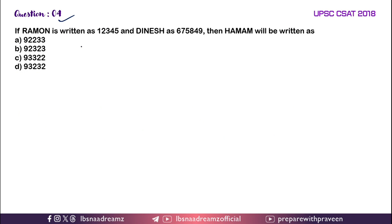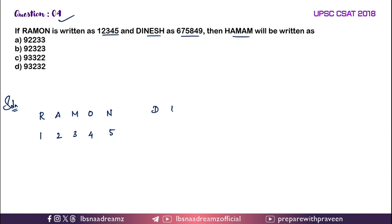Question 4: If RAMAN is written as 1, 2, 3, 4, 5 and DINESH as 6, 7, 5, 8, 4, 9, then HAMAM will be written as? Raman is written as 1, 2, 3, 4 and 5. Dinesh is written as 6, 7, 5, 8, 4 and 9. We have to find the code for HAMAM.